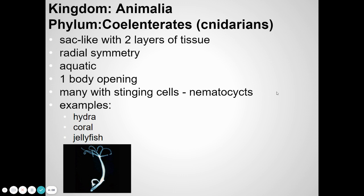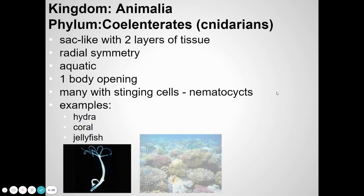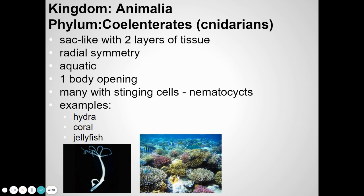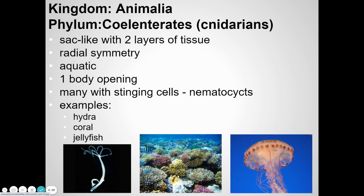The next group is cnidarians. A hydra is a small animal with tentacles in this group. Cnidarians typically have tentacles with stinging cells — like sea anemones and jellyfish. On the tentacles, there are small cells that basically shoot a little dagger into their prey's body, which can immobilize, stun, or kill them. In humans, this can cause a lot of pain. Jellyfish can float through the water using these tentacles to capture their prey.